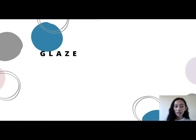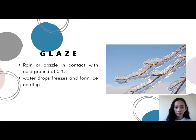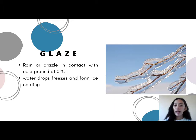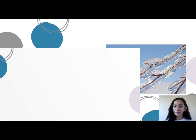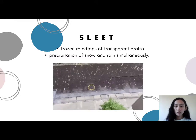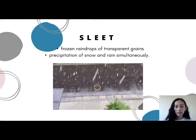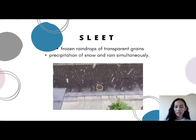The fourth form of precipitation is glaze. Glaze is rain or drizzle in contact with cold ground at 0 degrees Celsius, where water drops freeze to form an ice coating. The next form is sleet. Sleet is frozen raindrops of transparent grains. In Britain, it is a precipitation of snow and rain simultaneously.